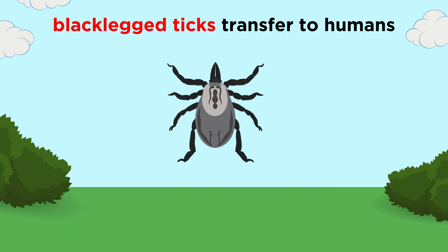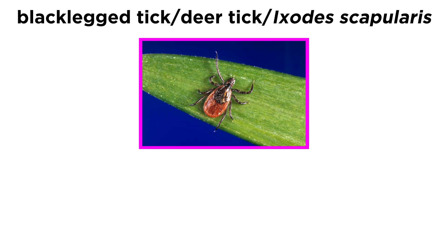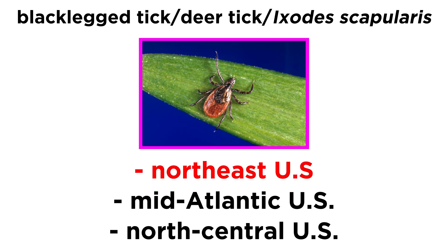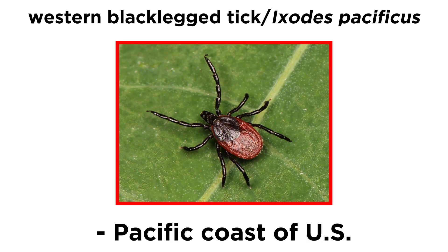In the US in particular, the black-legged tick, also known as deer tick, or more formally Ixodes scapularis, spreads the disease in the northeast, mid-Atlantic, and north-central regions of the US. The western black-legged tick, Ixodes pacificus, spreads the disease on the Pacific coast.